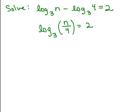So we have n over 4 equals 9 and then you can just multiply both sides by 4 to solve for n and we got 36.